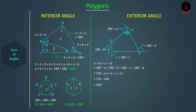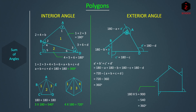Similarly for a pentagon, the sum of exterior angles = 5 × 180° − 540° = 900° − 540° = 360°. So the sum of exterior angles of any polygon is always 360°. This is easy to understand intuitively: when we make exterior angles we complete one full turn, and hence we always get 360°.